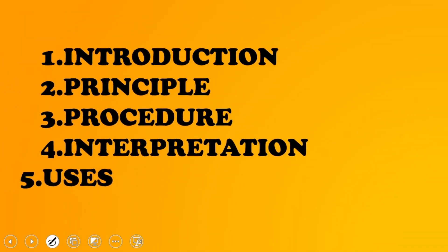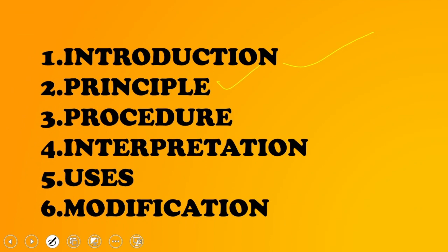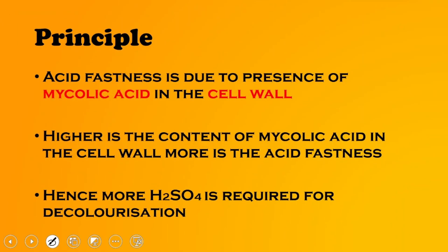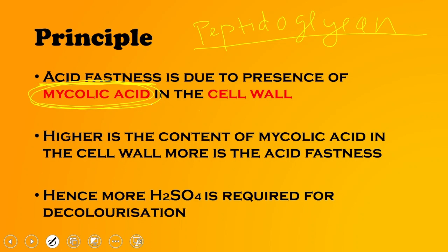Now let's cover the principle. Recall that gram stain's principle was based on the cell wall component peptidoglycan. For the acid-fast stain, the principle is mainly dependent upon the mycolic acid content present in the cell wall. Based on how much mycolic acid is present, we can define the acid-fastness of a particular bacterium. Higher the content of mycolic acid, greater the acid-fastness.